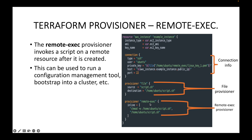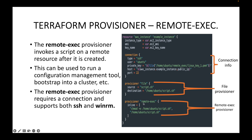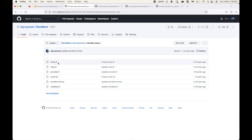If you want to execute something on the remote machine, we can make use of remote exec. The remote exec provisioner requires a connection and supports both SSH and WinRM. Like the file provisioner, remote exec also needs a connection block in order to connect to the remote machine, and we can use either SSH or WinRM connectivity depending on your machine.